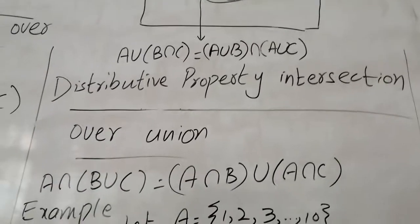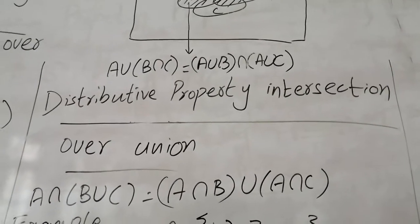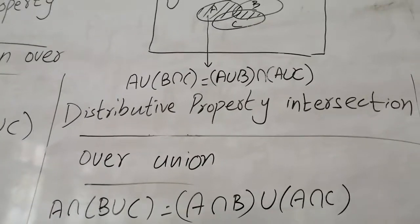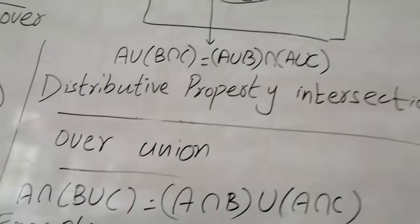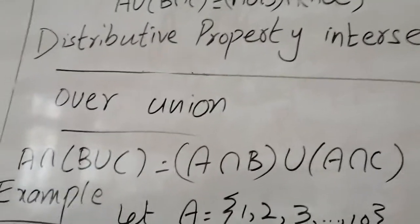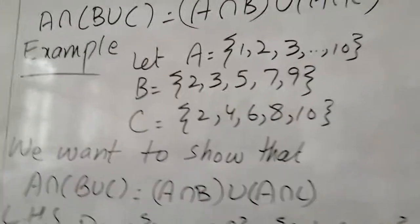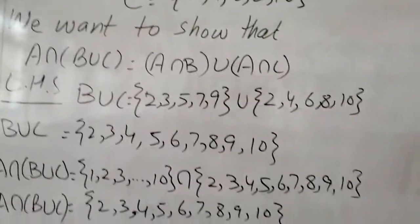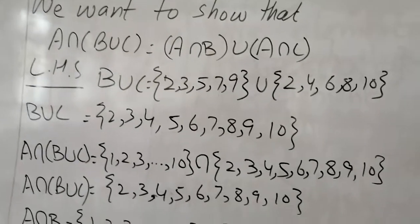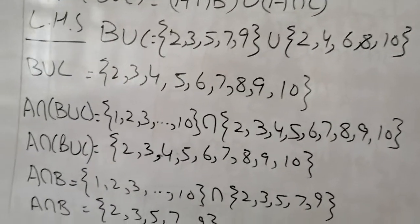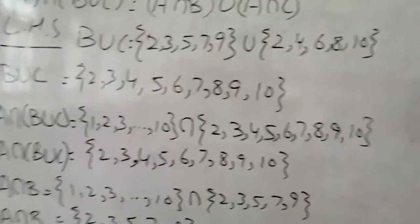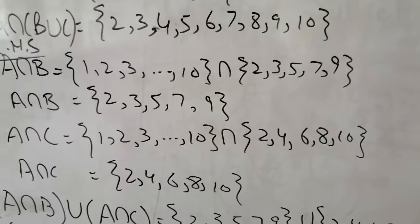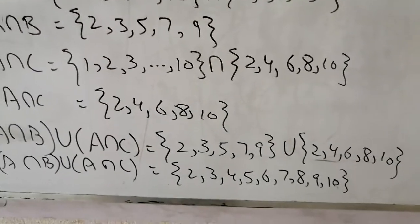Now we move to the distributive property of intersection over union: A intersection (B union C) equals (A intersection B) union (A intersection C). First, we take B union C which includes all elements of B and C. Then taking intersection with A gives the common elements. On the right side, we take A intersection B and A intersection C separately, then take their union — both sides give the same result.